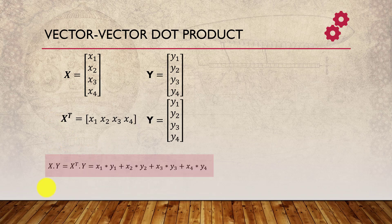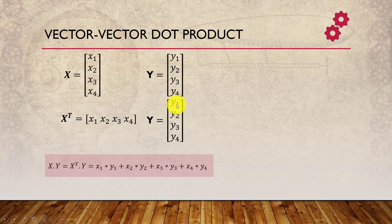To take the dot product of x and y, we transpose x so the number of columns in x equals the number of rows in y. The dot product is then the element-wise multiplication — x1·y1, x2·y2, x3·y3, x4·y4 — and then we sum them up. So for a vector-to-vector dot product we always get a scalar value as the result.